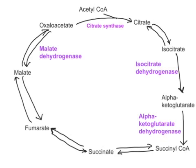Before we get into regulation, let me quickly revise the TCA cycle briefly. Acetyl-CoA condenses with oxaloacetate to make citrate — done by citrate synthase, an irreversible reaction. Citrate is converted to isocitrate by aconitase enzyme, a reversible reaction. Isocitrate is converted to alpha-ketoglutarate by isocitrate dehydrogenase complex, another irreversible reaction. Succinate is converted to fumarate by fumarate dehydrogenase enzyme. Fumarate goes into malate by fumarase enzyme. Malate is converted to oxaloacetate by malate dehydrogenase enzyme.